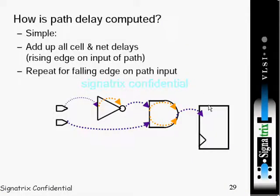So next we are going to see about how the path delay is computed. Here they mentioned two things: one is cell delay, second one is net delay. Cell delay is the component delay. If you look at this diagram here we have one NOT gate, AND gate, and one flip-flop. These are all the cells.